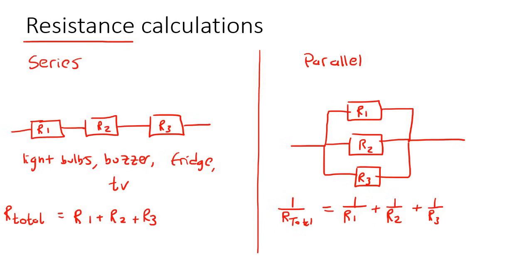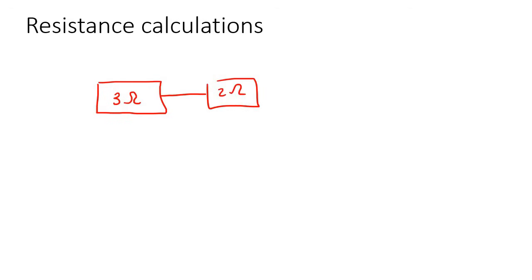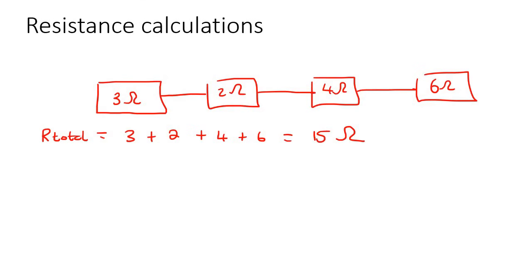Let's do our first example. Say we have resistors of 3 ohms, 2 ohms, 4 ohms, and 6 ohms all in series. To work out the total resistance you just add them together: 3 plus 2 plus 4 plus 6 equals 15 ohms.